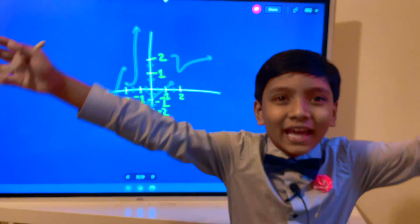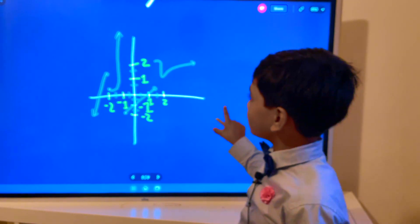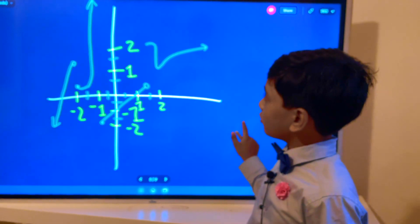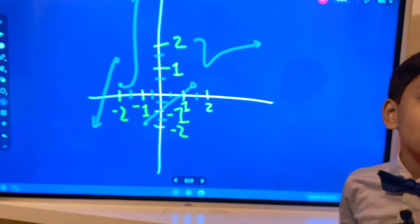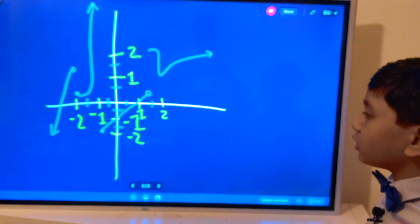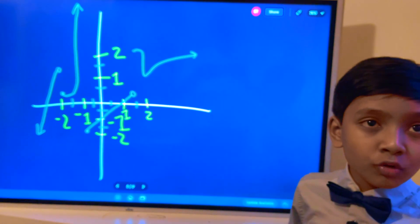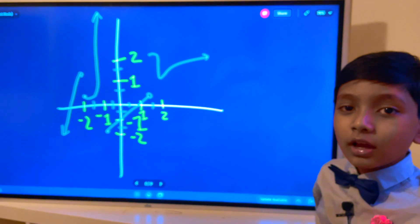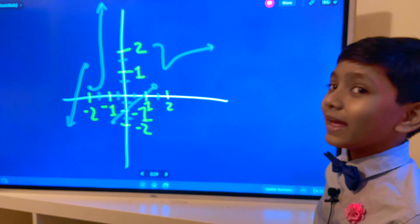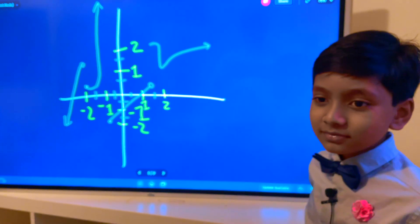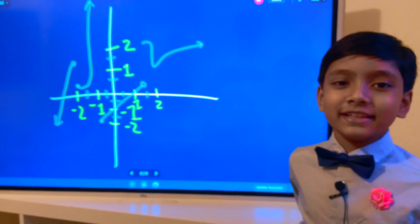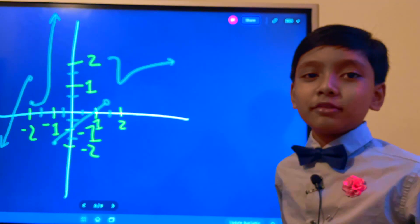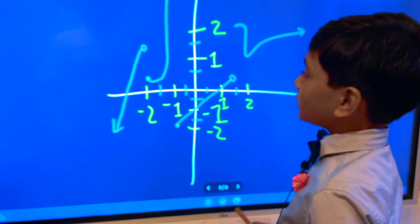All right, so here's our example. Where are the intervals where f of x is continuous? Obviously the cameraman's heartbeat isn't continuous, so that's not this function. Let's see what the intervals are.